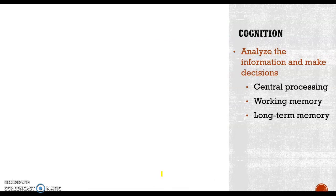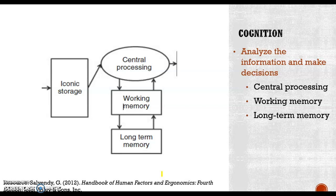Let's take a look at the second stage: cognition. At this stage, we analyze the information and make decisions. There are three major steps. We get information from storage from our input, then this input goes into central processing — the main part of our brain — where we organize different information and make decisions. During central processing, we use working memory and long-term memory. Working memory, also called short-term memory, lasts only several seconds to one or two minutes. Long-term memory lasts for a long time and we retrieve information from it. Based on all these resources, we make decisions.